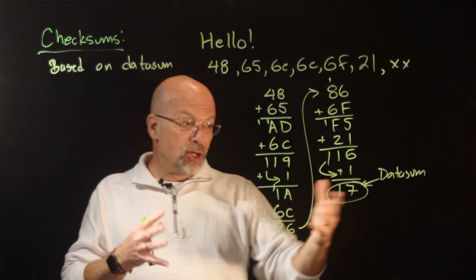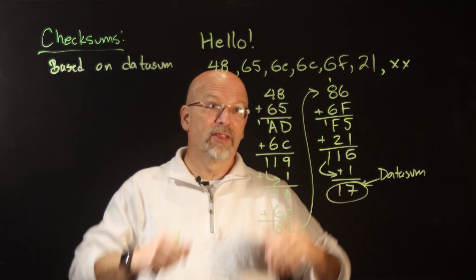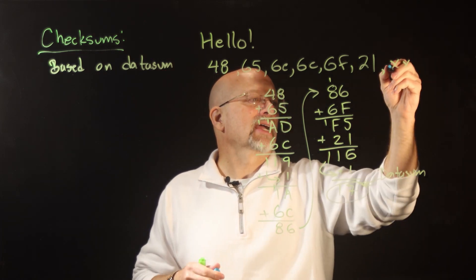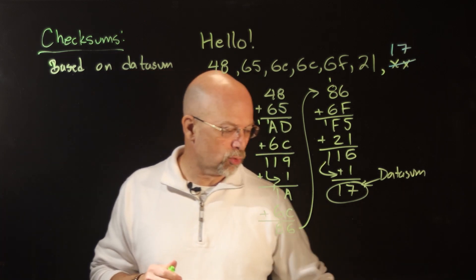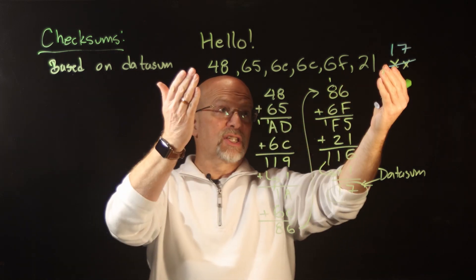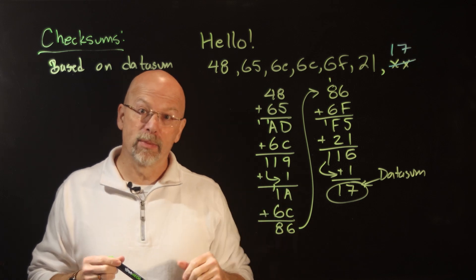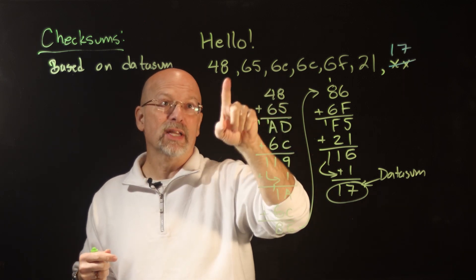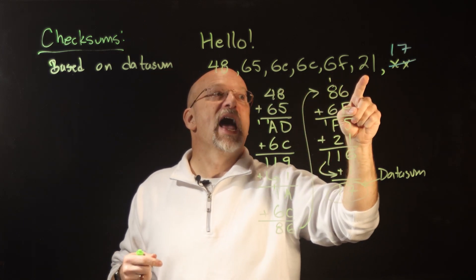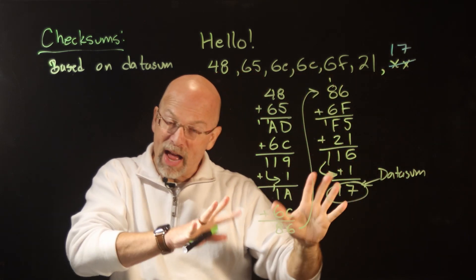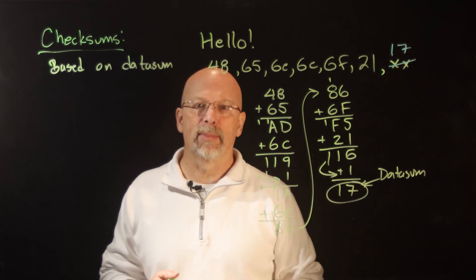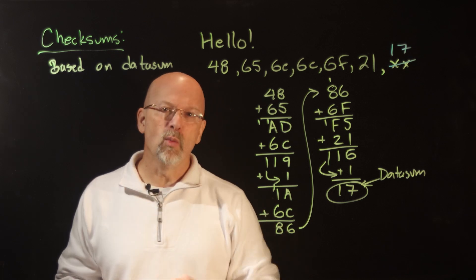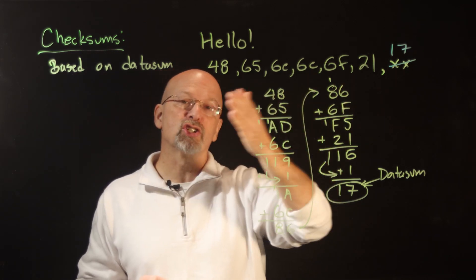We use this data sum to check all the bytes we've sent. One option is to replace the placeholder byte with 17 and send 7 bytes total instead of just the 6 that make up 'Hello!'. When the receiving device gets this, it adds 48, 65, 6C, 6C, 6F, 21 together using the same process and should get 17. It does a quick compare — if they're equal, great; if not, it asks the sender to resend the message.